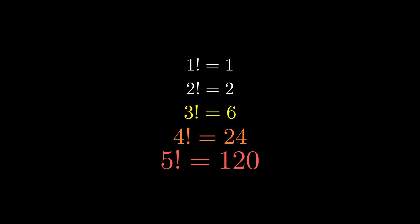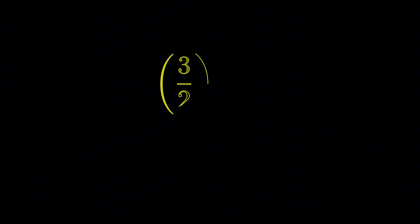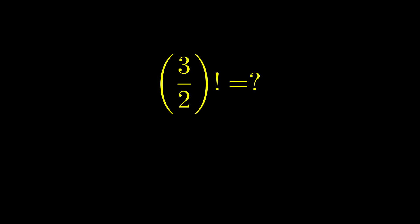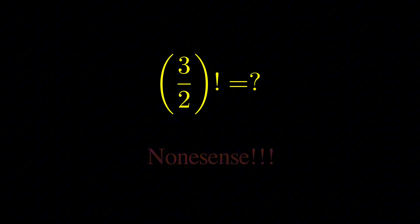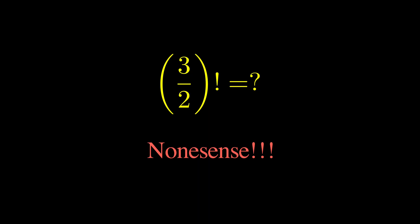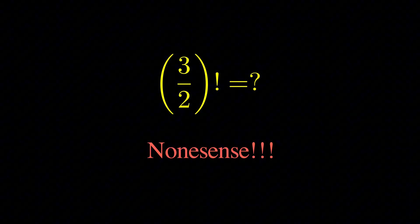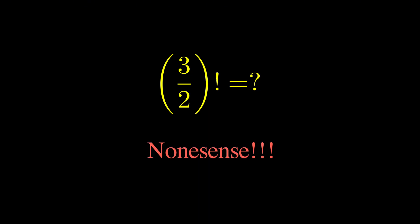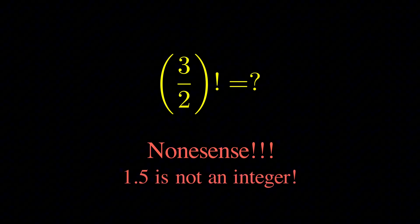Now here's where things get weird and kind of mind-blowing. What if I asked you to calculate 3 halves factorial? Like, what's the factorial of 1 and a half? Your first instinct might be to say, that's nonsense because factorial is defined as multiplying all the integers from n down to 1, and 1 and a half isn't an integer.